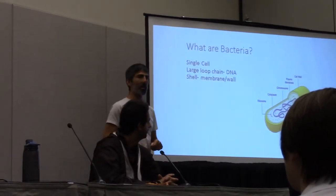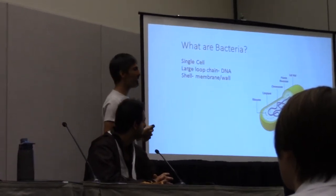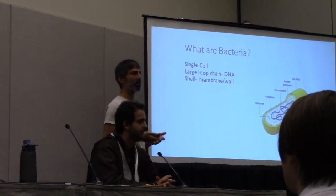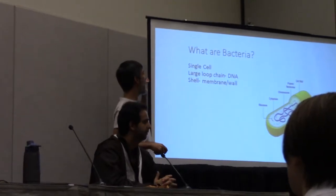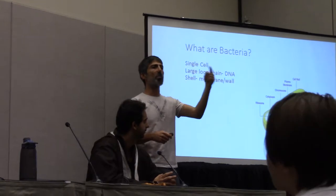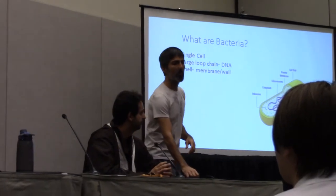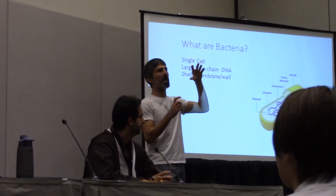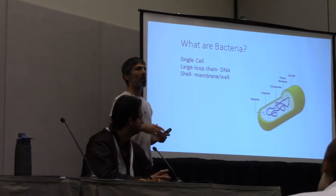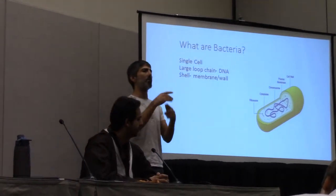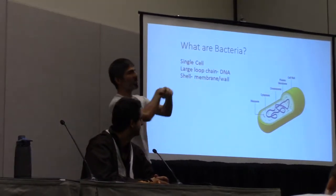Very briefly, what are bacteria? Bacteria are single-cell microorganisms. Archaea are single-cell microorganisms as well — they're kind of similar to bacteria but different. Bacteria have large loop-chain DNA; most bacteria have circular DNA, which is different from our DNA. We generally have linear chromosomes with telomeres at the ends. In bacteria, they don't have these telomeres because they don't have ends — they just have loops that form a big loop chain inside the cell.